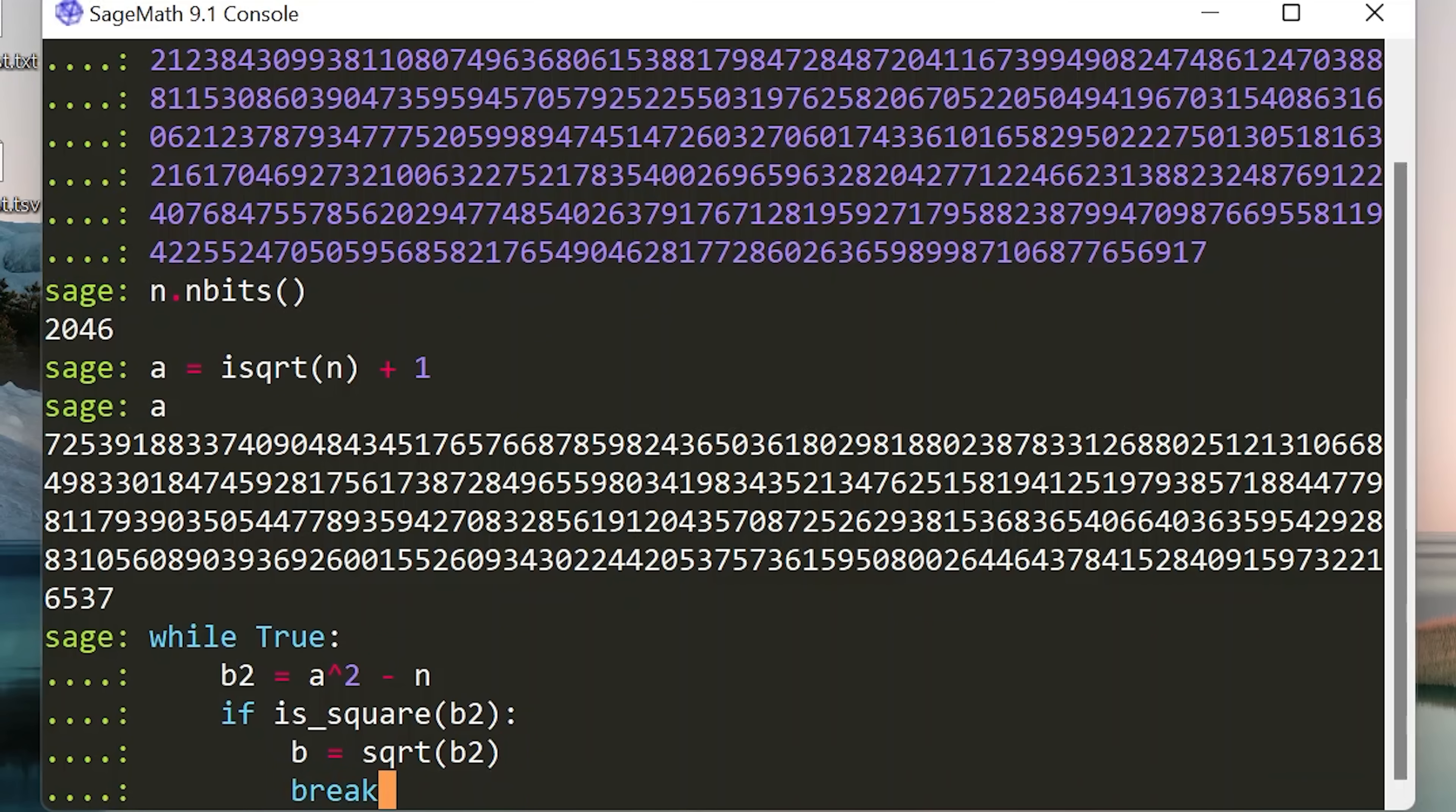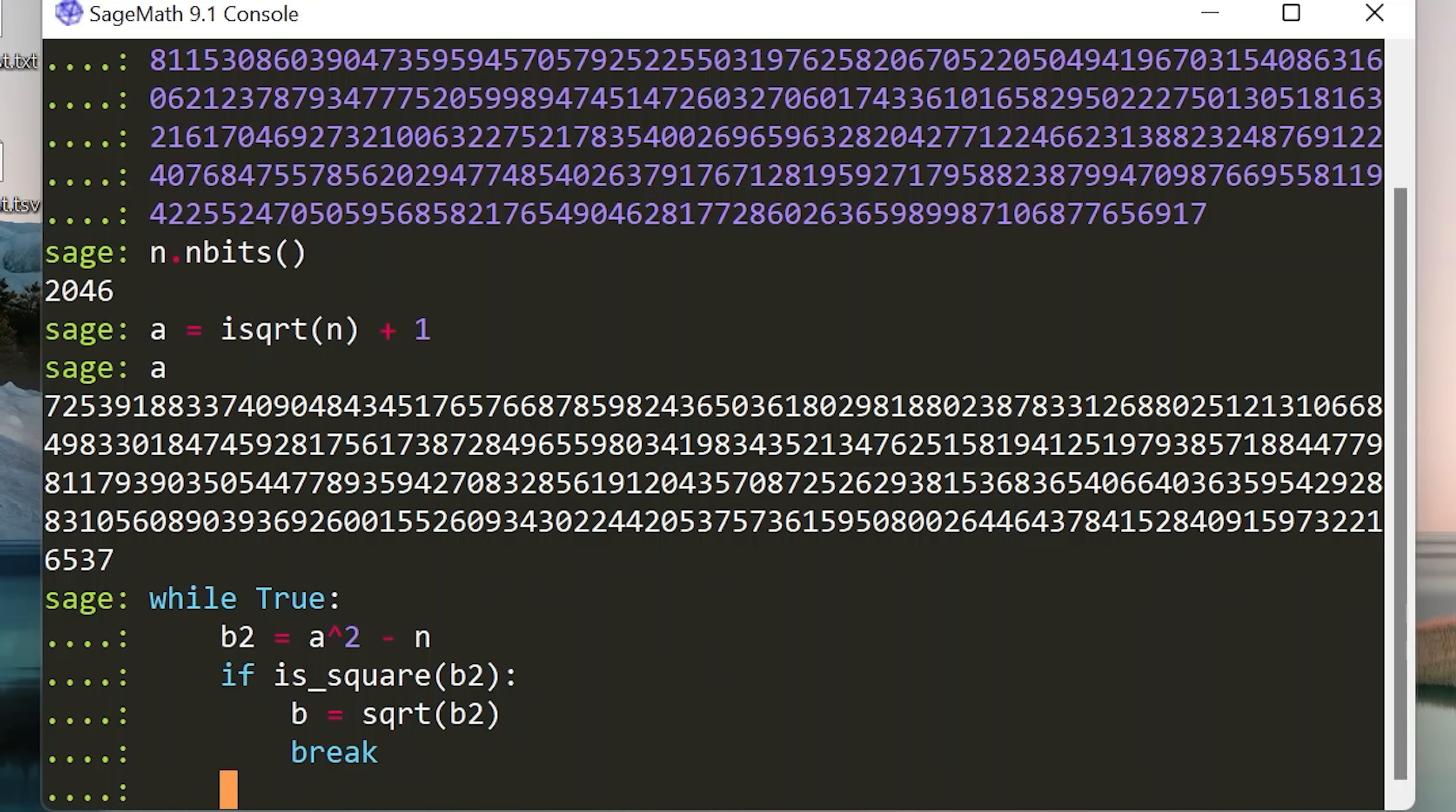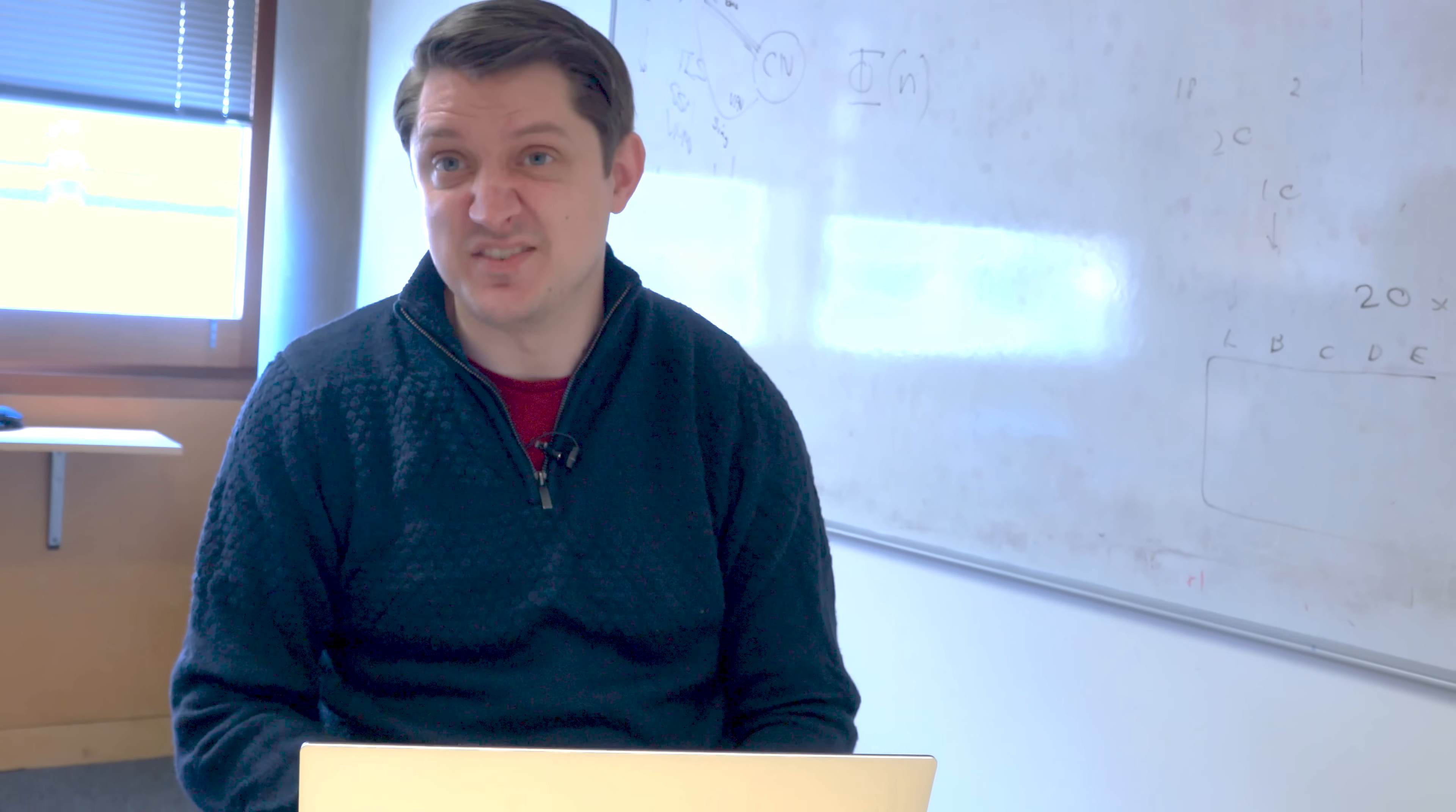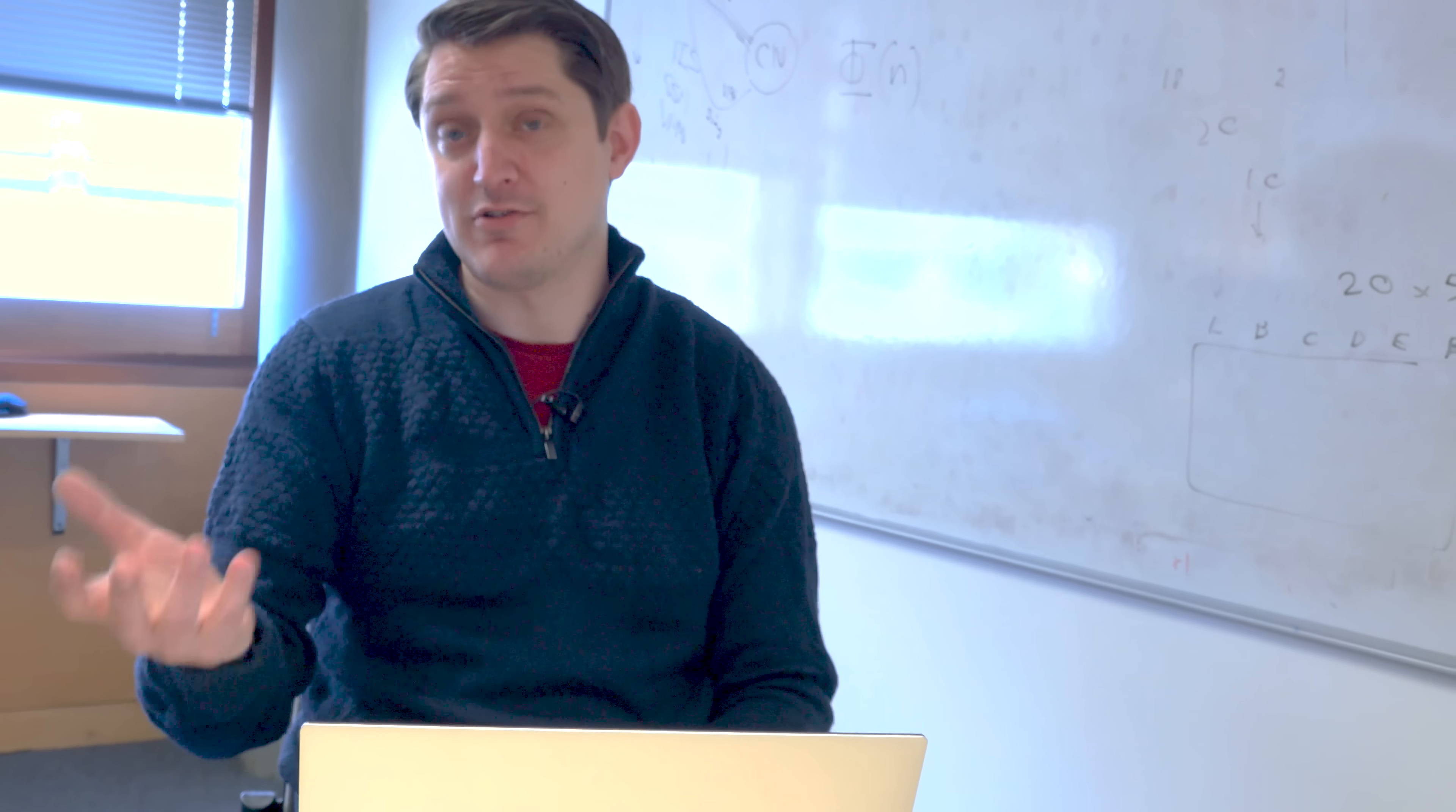So we're going to do... then we're going to calculate B is equal to the square root of B2. Otherwise, and then we're going to break out of our loop. If not, we're going to do A equals A plus 1, right? And it's already finished. I think it was about 10 iterations of this before we hit on the correct A. It's just ridiculous how quickly this works.